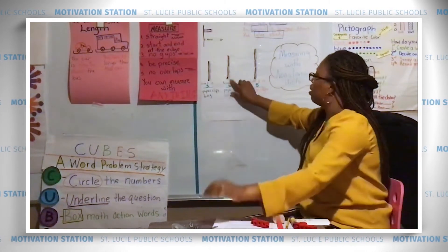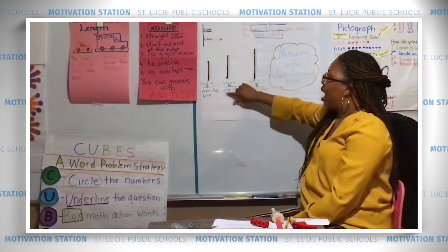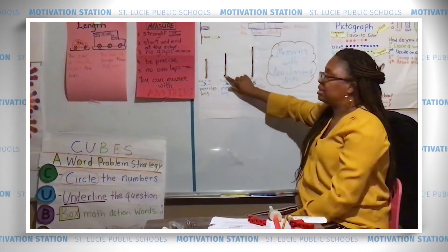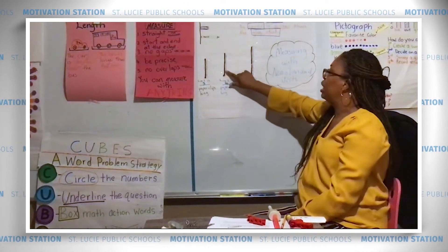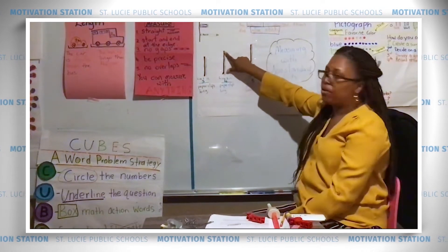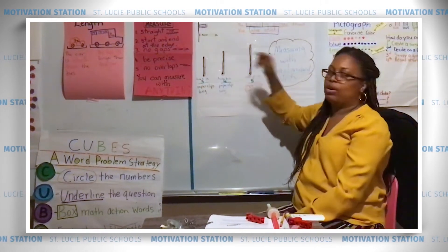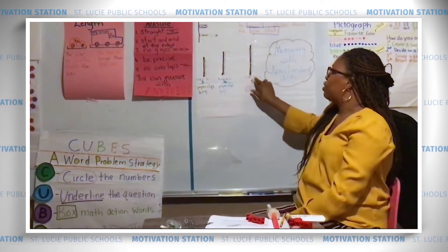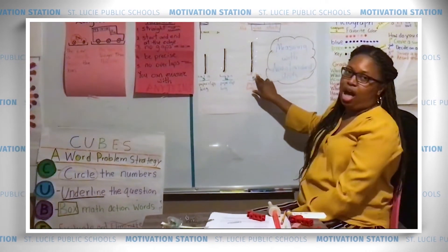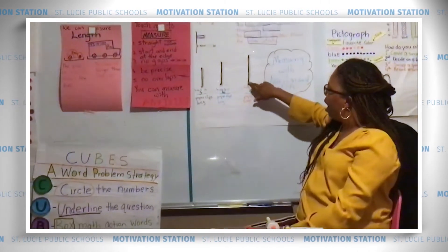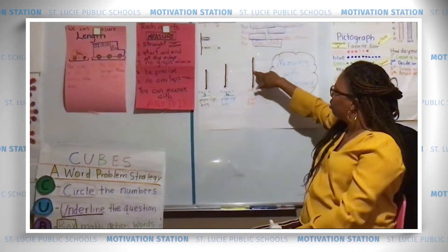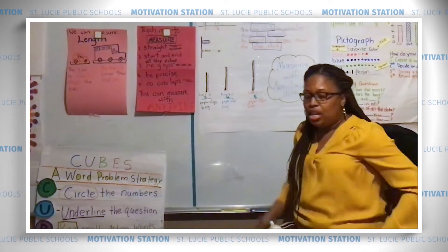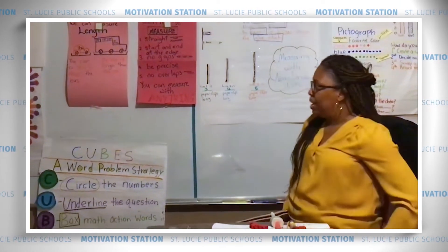Let's look at line number four. How many paper clips long is it? Let's count: one, two, three, four. Good job! How about line three? How many paper clips long? One, two, three, four, five. So that's some non-standard measurement right there.